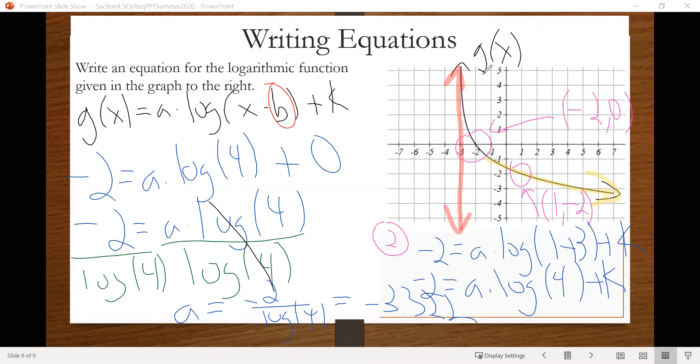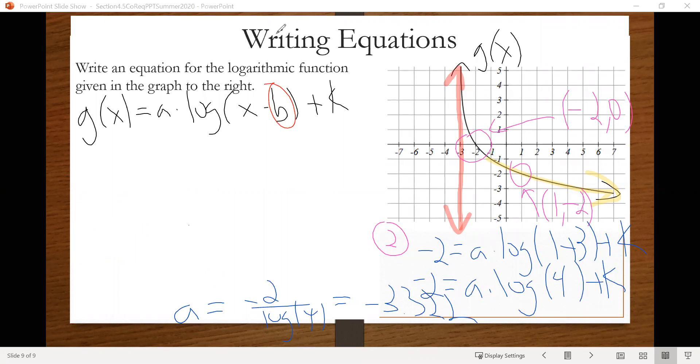But now that we have that, we have the value for a, we have the value for k, we also know the value for b. We can plug that information in and write our equation now. So the equation for this, related to this graph then, will be g of x equals negative 3.322 times log of x plus 3. And that would be it. Since the value for k is 0, we don't need to add that there on the end. So that would be our equation. All right. That's it for now. Thank you for watching.